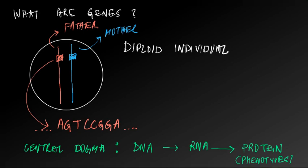To summarize: the diploid individual has two chromosomes of each type. The chromosome is a long DNA molecule, and stretches of that DNA molecule are genes, which are transcribed into RNA. And that RNA is translated into protein, which determines the phenotypes or observable features of these diploid individuals.